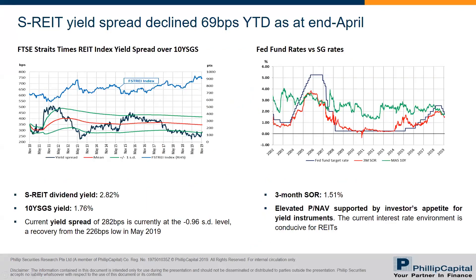For the yield spread, it is actually at 2.82%. It is down 10 basis points year-to-date against the 10-year SGSU, which has also declined and is now at 1.76%. At 2.82%, the yield spread is currently slightly above the 1 standard deviation level, at 0.96 SD. This is a recovery from the low in May 2019 of 2.26%. The SORA dipped slightly lower to 1.51%.